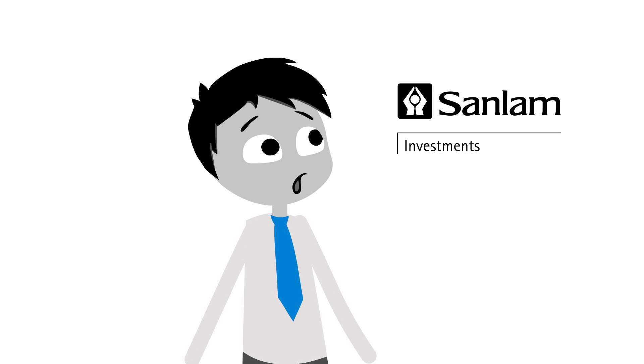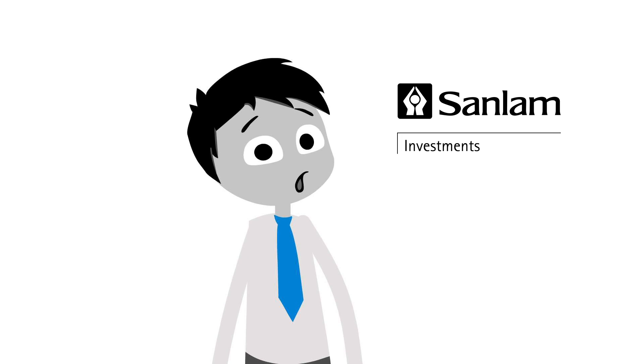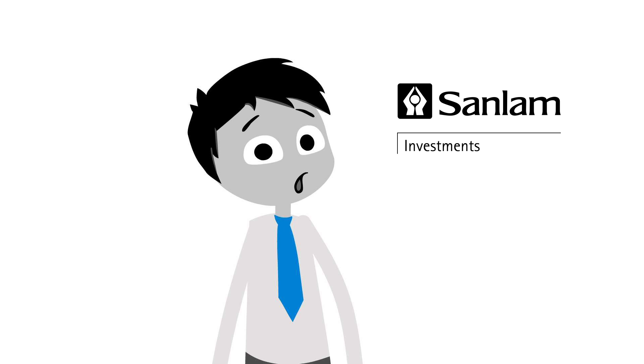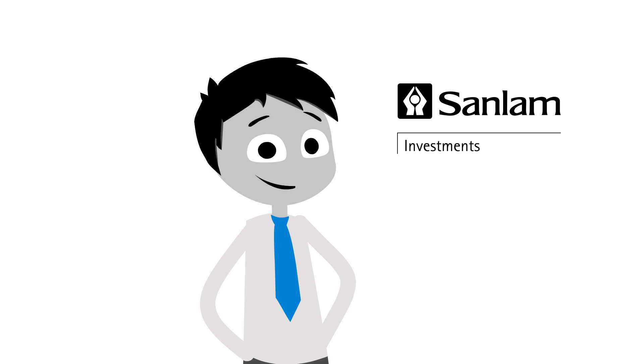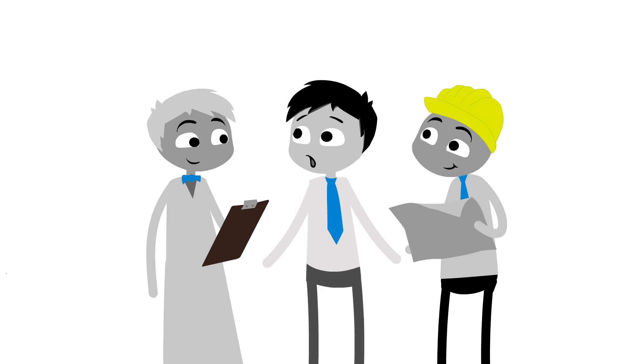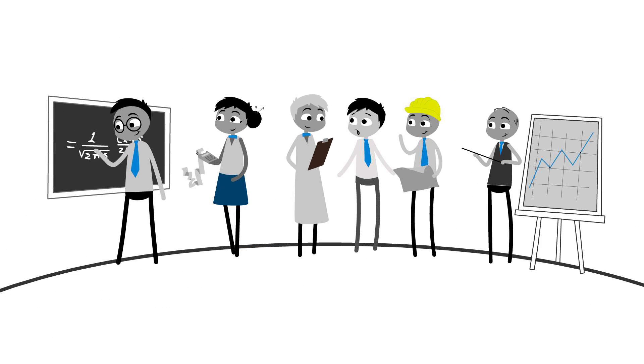We have a unit trust called the General Equity Unit Trust. This is a unit trust anyone can buy that selects stocks across the market to invest in. But the people selecting which companies to buy or sell are business scientists, engineers, economists, accountants, and mathematicians.